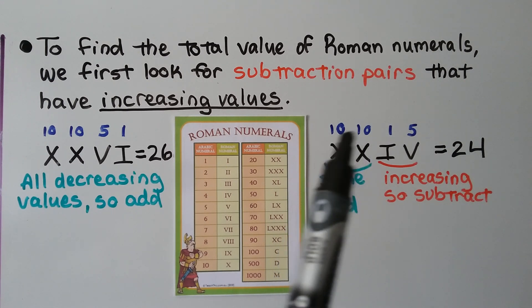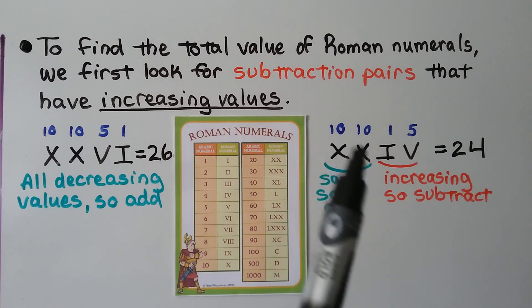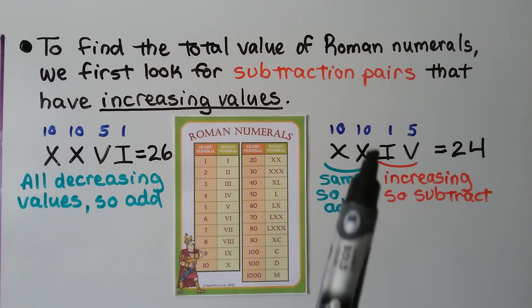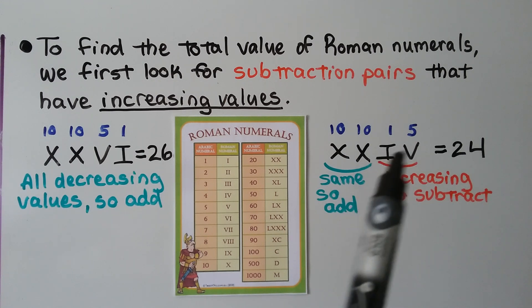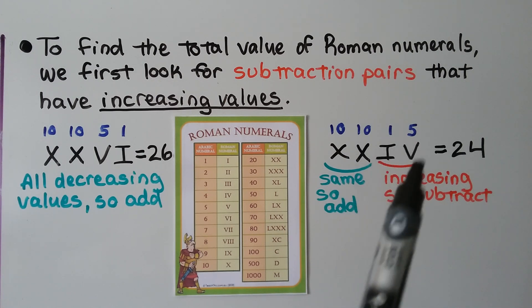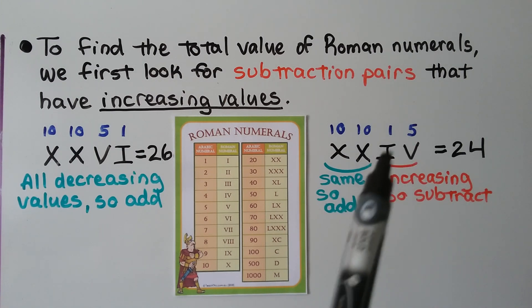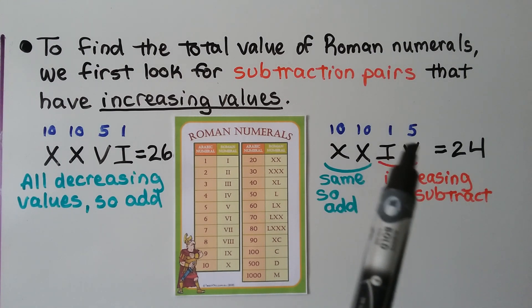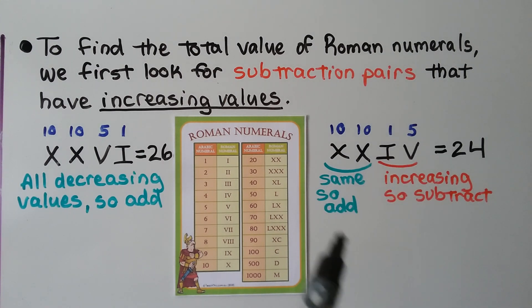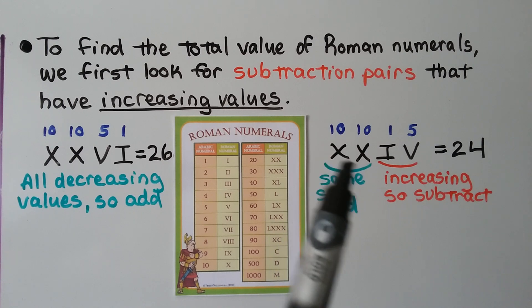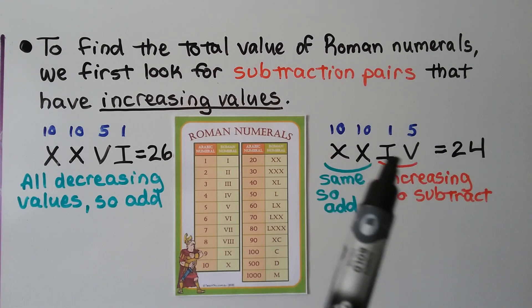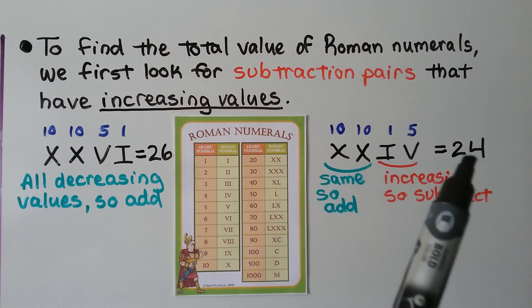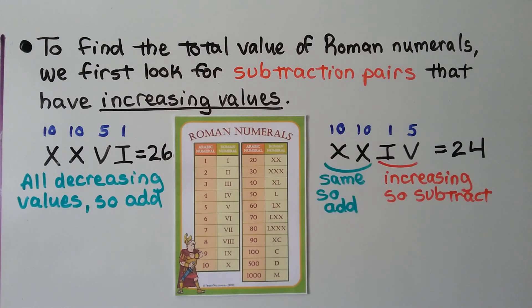For XXVI, the values were all going down so we just added them: 10, 20, 25, 26. For XXIV, we add the two X's — 10 plus 10 is 20 — and then notice the pair IV is increasing from 1 to 5, so we do 5 minus 1 is 4, giving us 24.